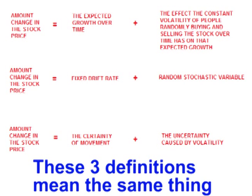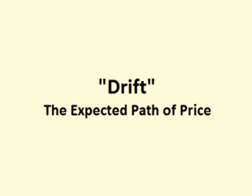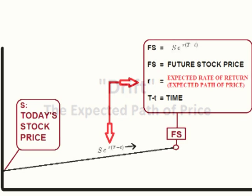We use the periodic daily return to calculate out an expected path of price and a probability range, spread, or distribution around that expected path of price. The expected path of price is the path that has the greatest odds of occurring. There is more than one method for calculating out the expected path of price. One method is to simply use the average of the periodic daily returns, which is the percent of change for price that occurred the most in the past, so it is logical to assume it will be the percent of change that occurs the most in the future as well.